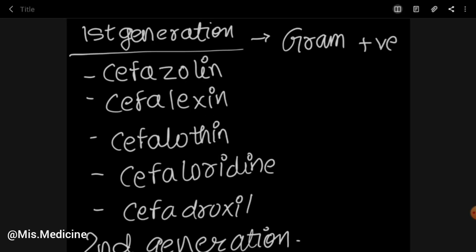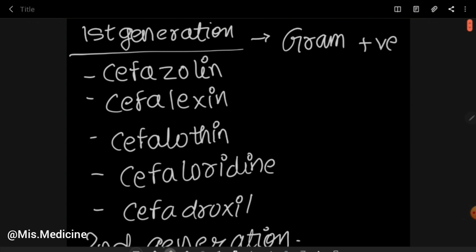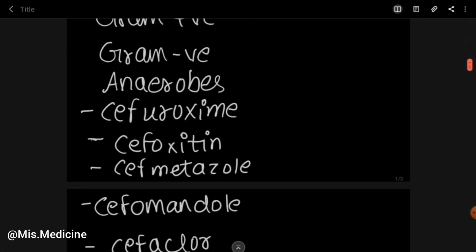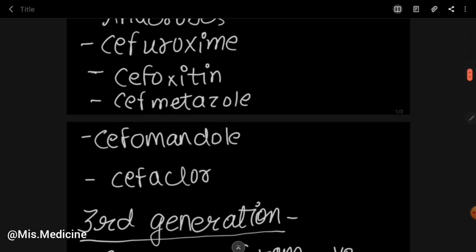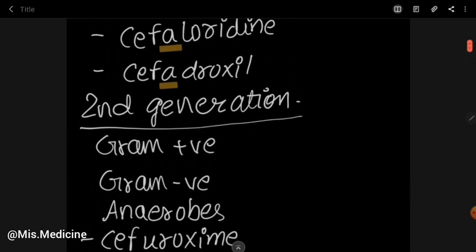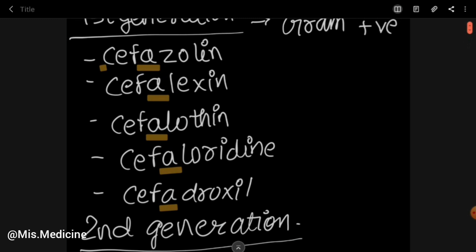Now, how can you remember Cephalosporins? In first generation, you will notice that the letter A appears in all drug names: Cefazolin, Cephalexin, Cephalothin, Cephaloridine, and Cephadroxil. The only exception is Cefaclor, which belongs to second generation. So except Cefaclor, all drugs with A in their names are first generation.